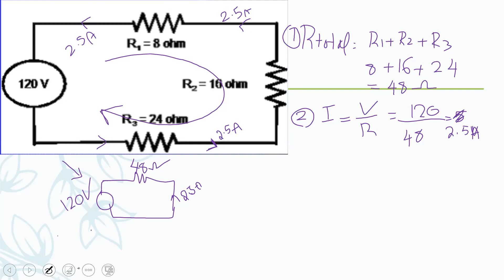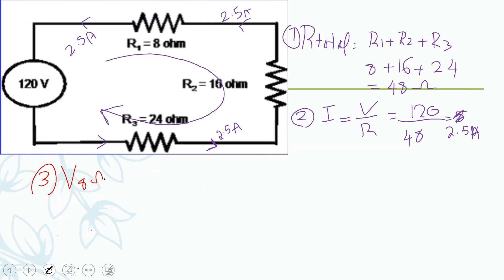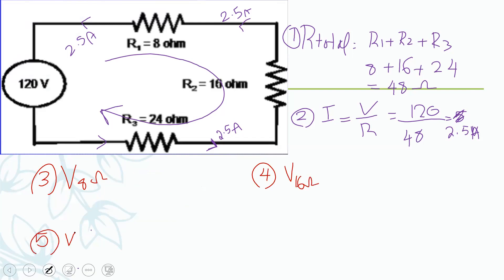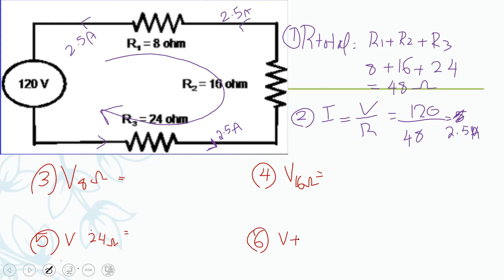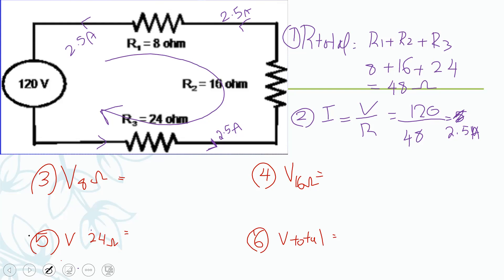After simplifying, I have found the current so I no longer need the simplified circuit. Now I need to find the voltage at each resistor: the voltage at the eight-ohm resistor, the voltage at the sixteen-ohm resistor, and the voltage at the twenty-four-ohm resistor, and then the total voltage.